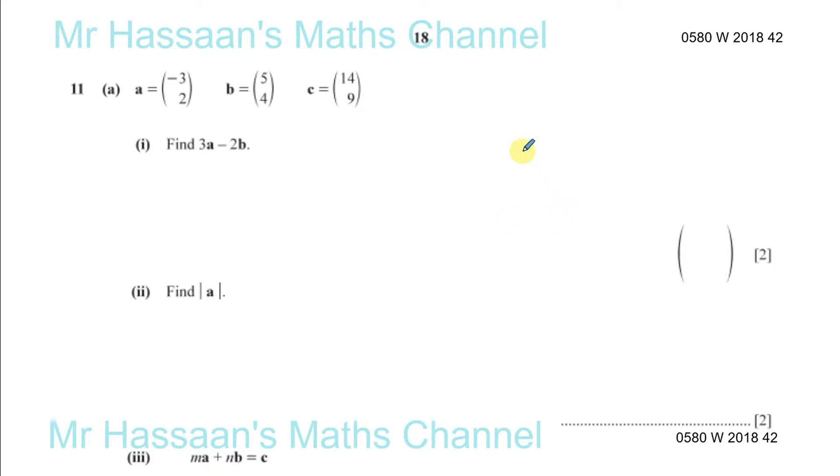Okay, here we have question number 11 from October, November 2018, paper 4, variant 2. It's a question about vectors.